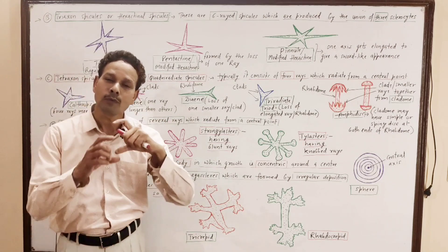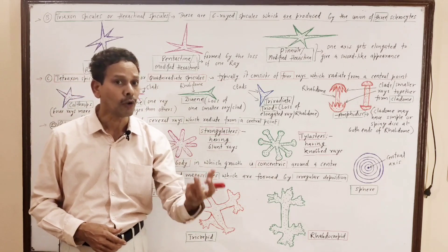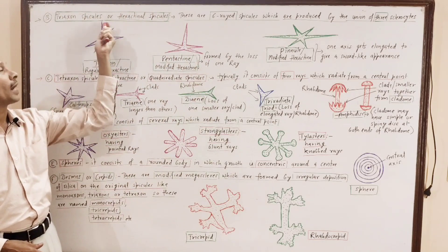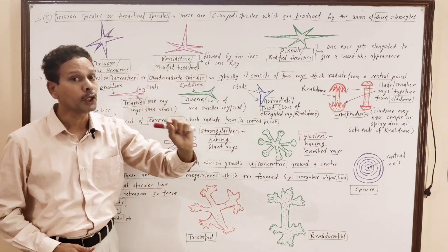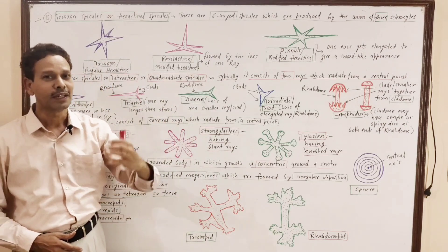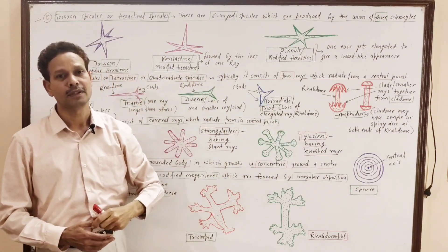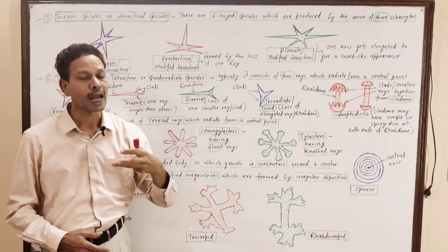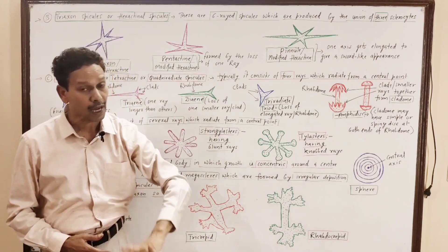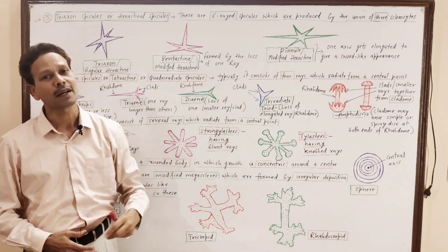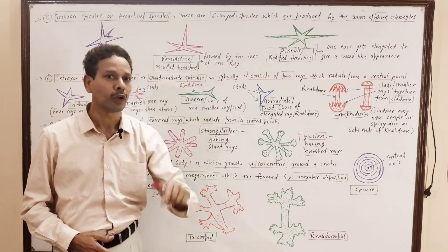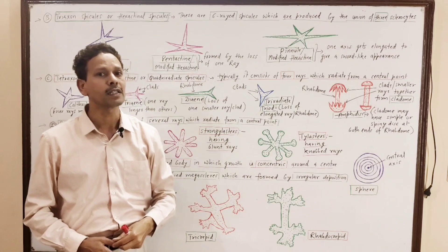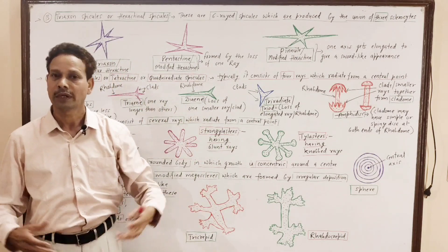In the case of monoaxones, only one axis is present, and these monoaxone spicules are developed from one sclerocyte. Triaxone spicules are hexactinal spicules, meaning these spicules have six rays. These spicules are produced by the union of three sclerocytes. In the case of monoaxones, only one sclerocyte gives rise to a spicule, but in the case of triaxone hexactinal spicules, three sclerocytes unite to produce a triaxone spicule.